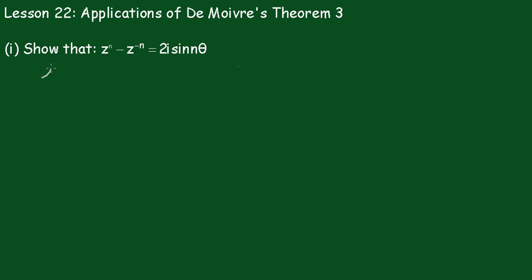Again we'll let Z equal cos θ plus i sin θ. So Z^n is cos nθ plus i sin nθ.